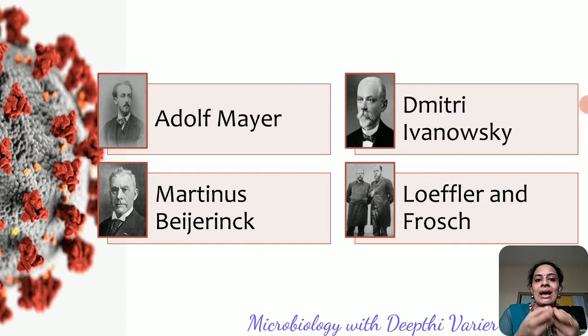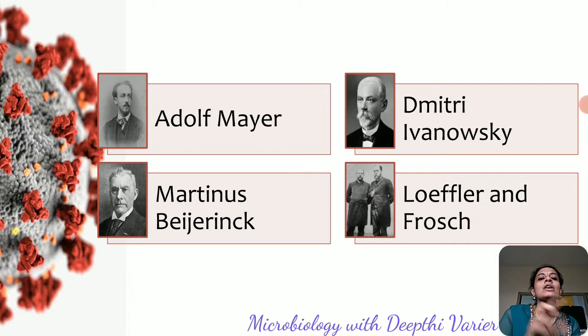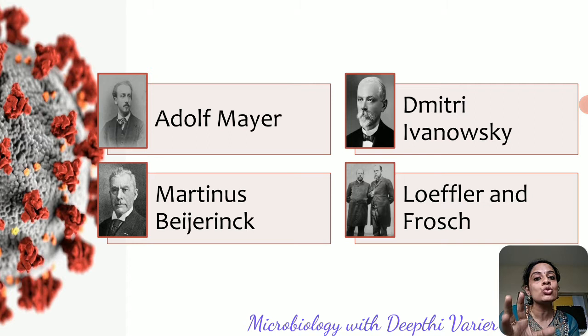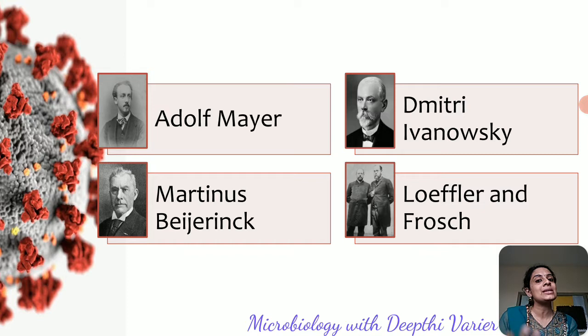Mayer took the sap or infected juice of tobacco plants and applied it onto healthy plants. When he did so, he realized that the healthy plants were being affected by the juice of the infected plant, meaning that whatever was causing the disease was present in that sap. He also found that if this juice was heated above 55 degrees Celsius, it became ineffective, so heating was able to kill the disease-causing element.